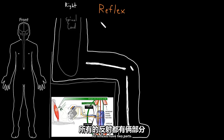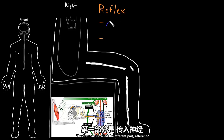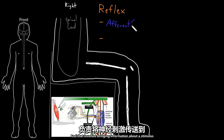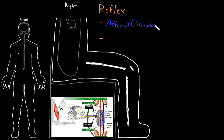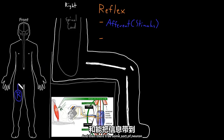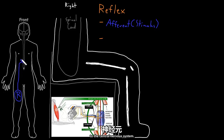All reflexes have two parts. The first part is called the afferent part, and that involves bringing information about a stimulus into the central nervous system. There'll be some sort of receptor somewhere in the body that can detect the stimulus, and then there'll be some sort of neuron that brings that information into the central nervous system.